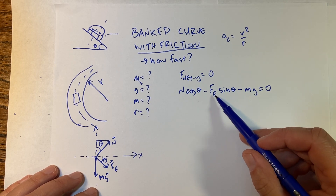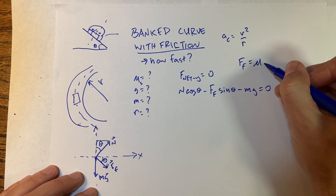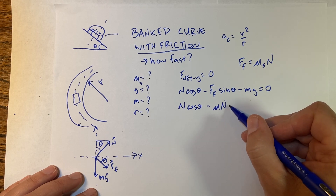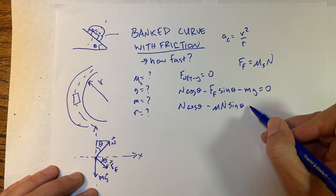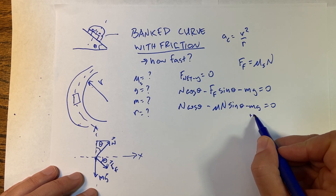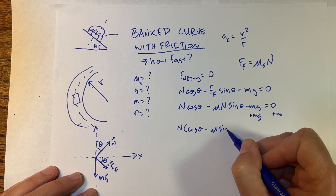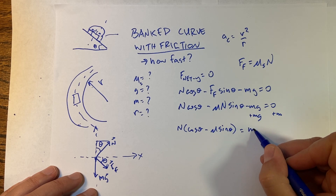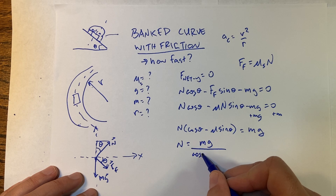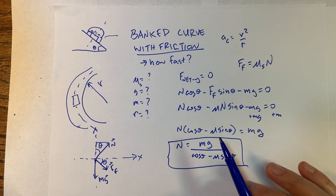At maximum friction, f-friction equals the coefficient of static friction times the normal force, so I can substitute that in. I get: N cosine theta minus mu-N sine theta minus mg equals zero. I need the normal force, so let's solve for it. Adding mg to both sides and factoring out N, I get N times (cosine theta minus mu sine theta) equals mg. Dividing through, I get N equals mg over (cosine theta minus mu sine theta).